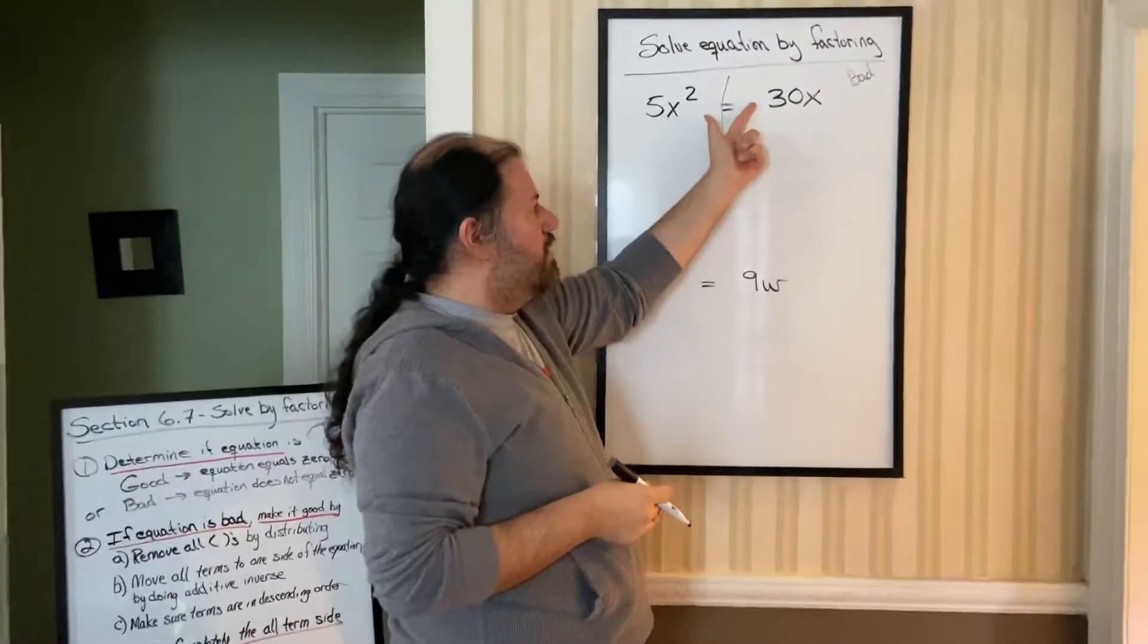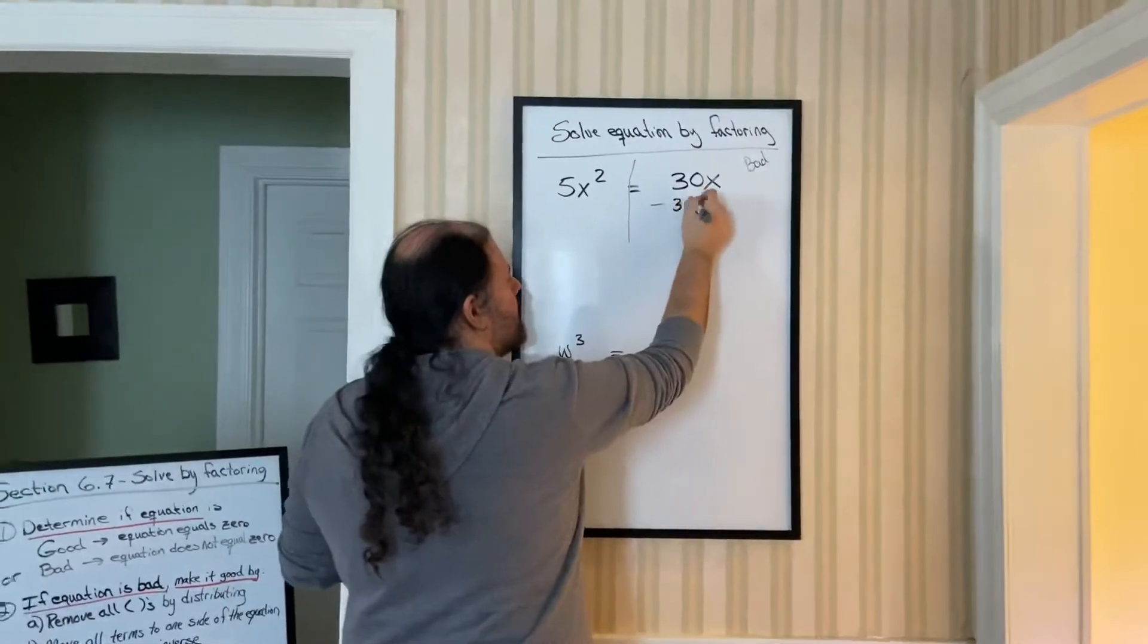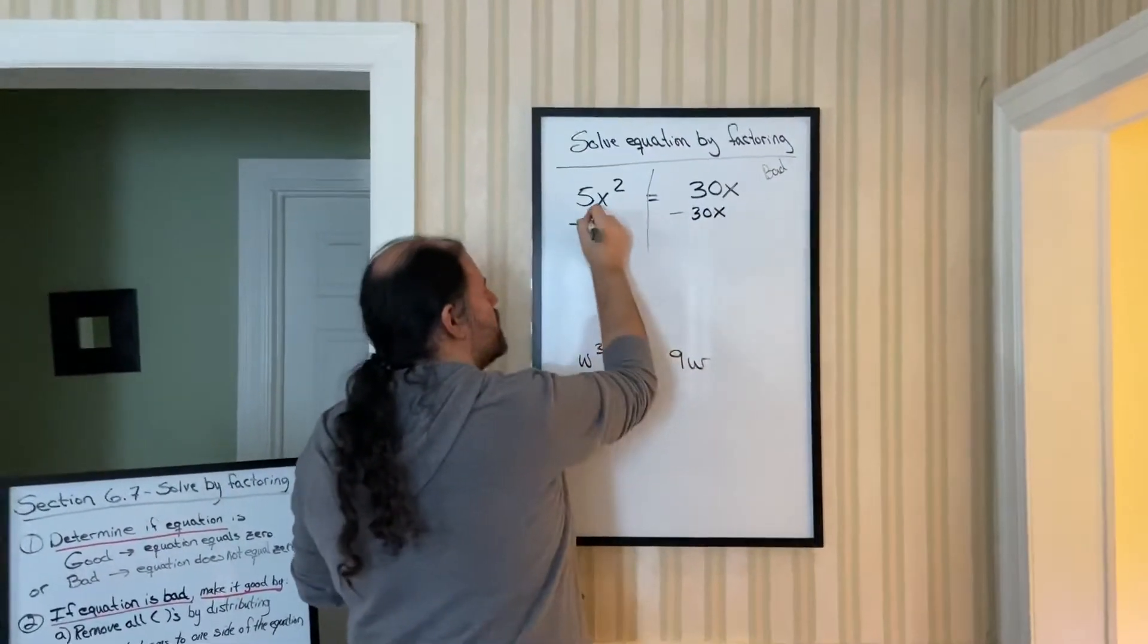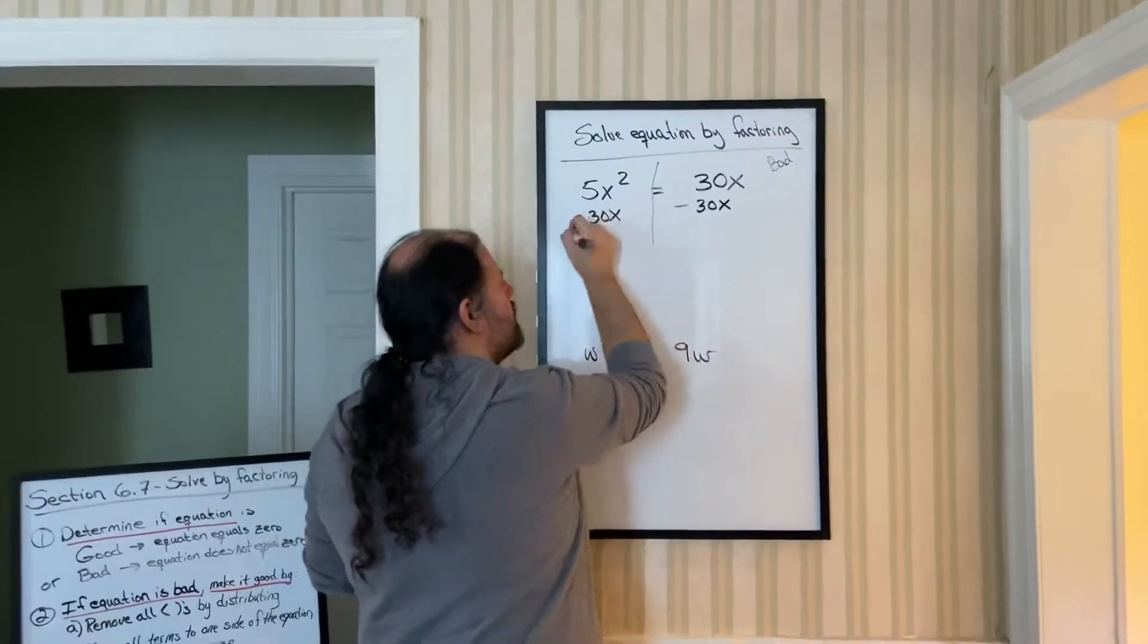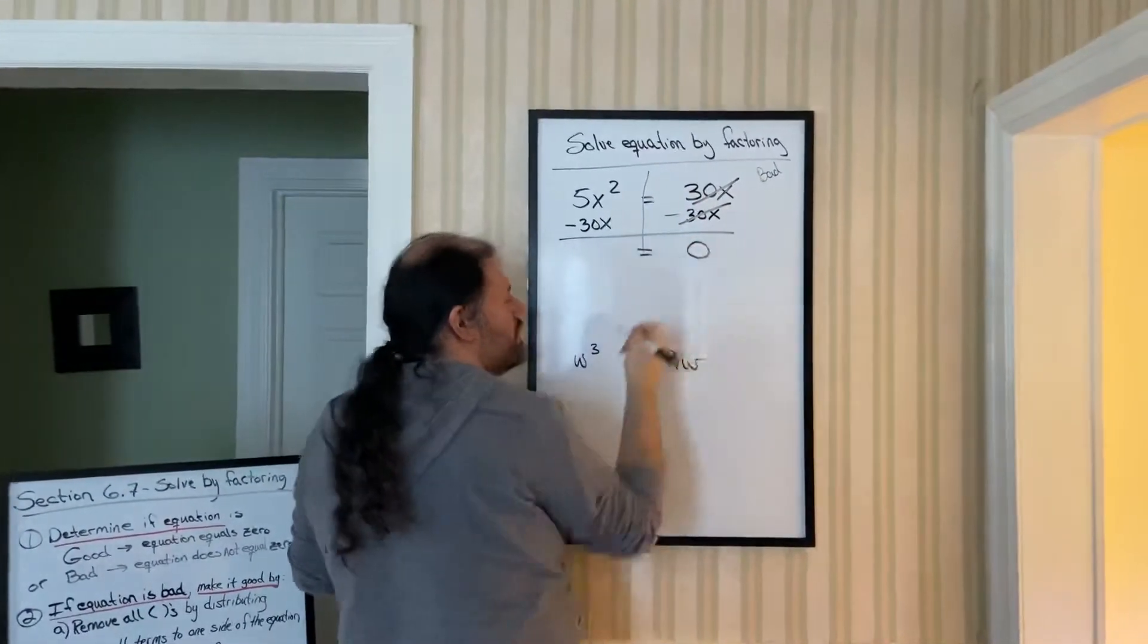Whatever you do to one side of the equation, you must do to the other side. These are additive inverses, so they cancel out to be, there's your zero.